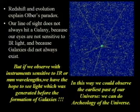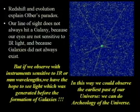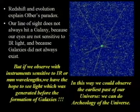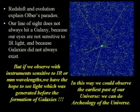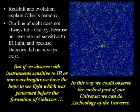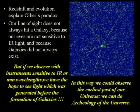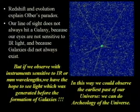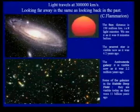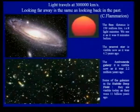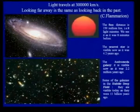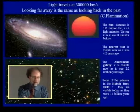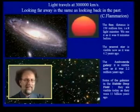Redshift and evolution explain Olbers' paradox: our line of sight does not always hit a galaxy because our eyes are not sensitive to infrared light and because galaxies did not always exist. But if we observe with instruments sensitive to infrared or millimeter wavelengths, we have the hope to see light present before the formation of galaxies, allowing us to observe the earliest past of our universe — archaeology of the universe. This idea goes back to Camille Flammarion, who said that since light travels at a constant finite speed, looking far away is the same as looking into the past.